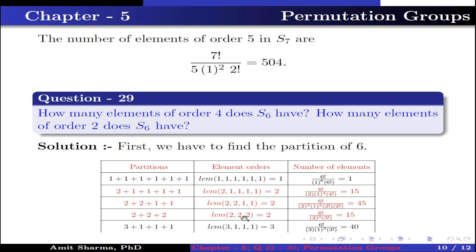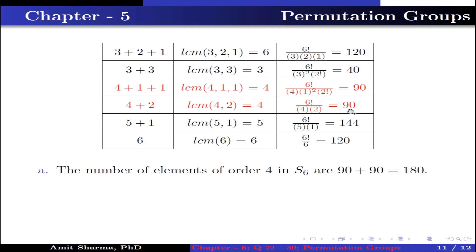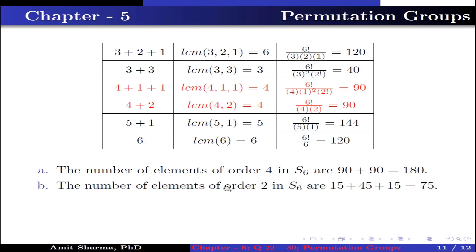The partition 4 + 1 + 1 has LCM 4, giving elements of order 4: 6! ÷ (4 · 1² · 1! · 2!) = 90. The partition 4 + 2 has LCM 4: 6! ÷ (4 · 2 · 1! · 1!) = 90. Part A: the number of elements of order 4 in S6 is 90 + 90 = 180. Part B: the number of elements of order 2 in S6 is 15 + 45 + 15 = 75.